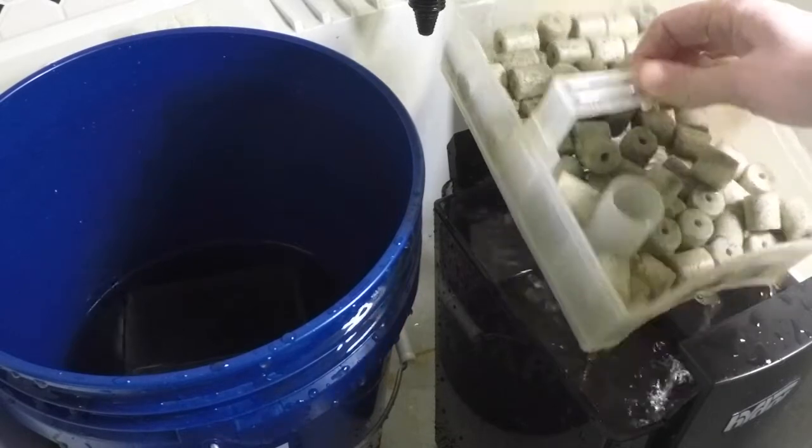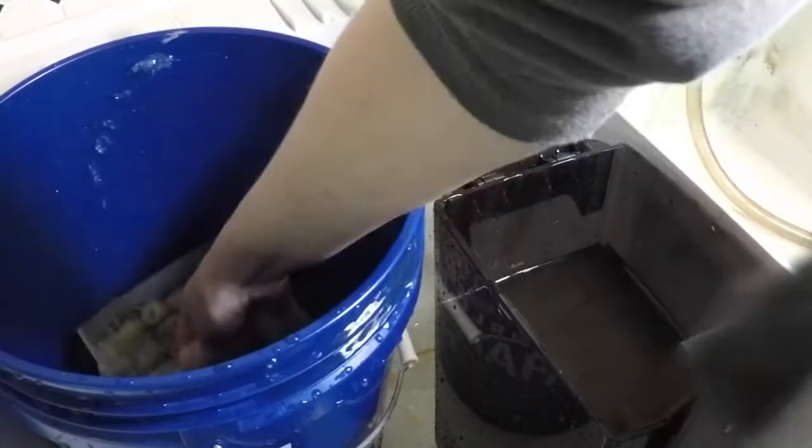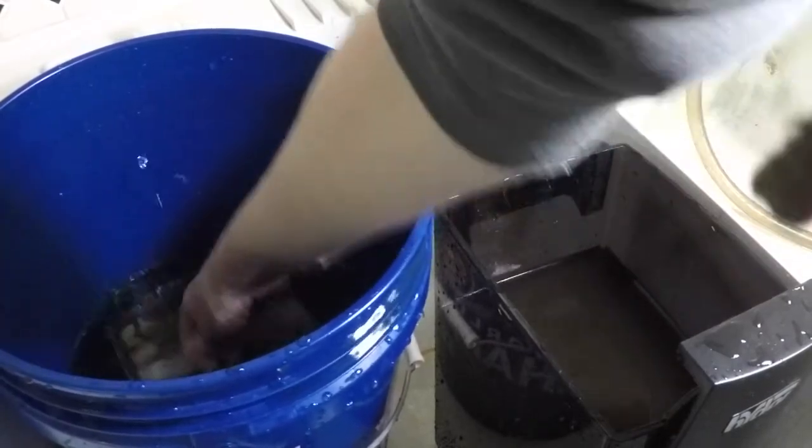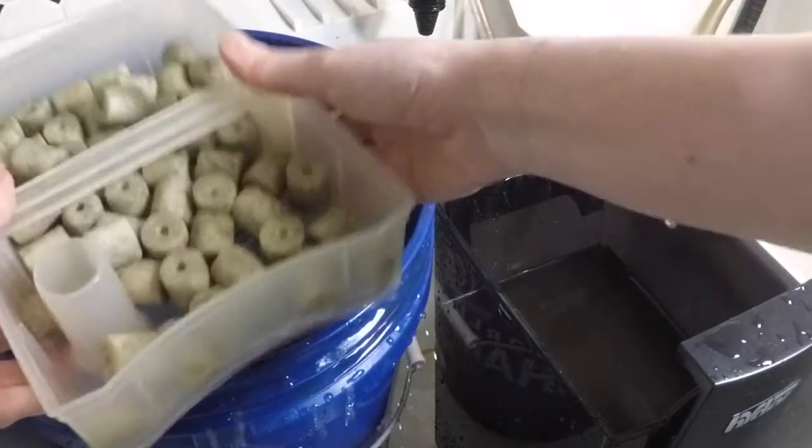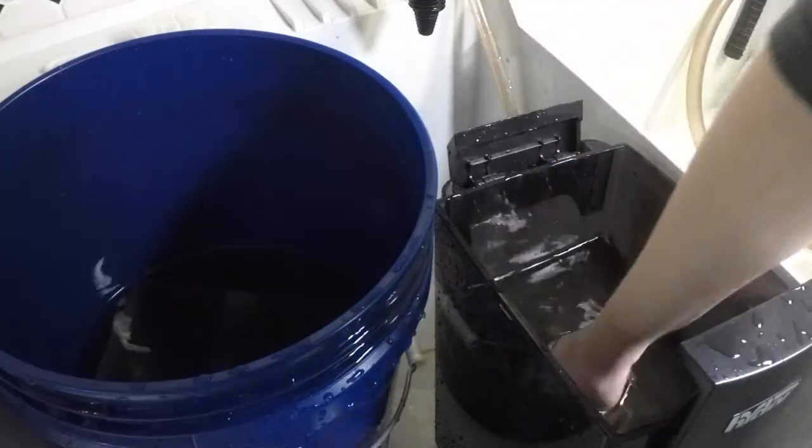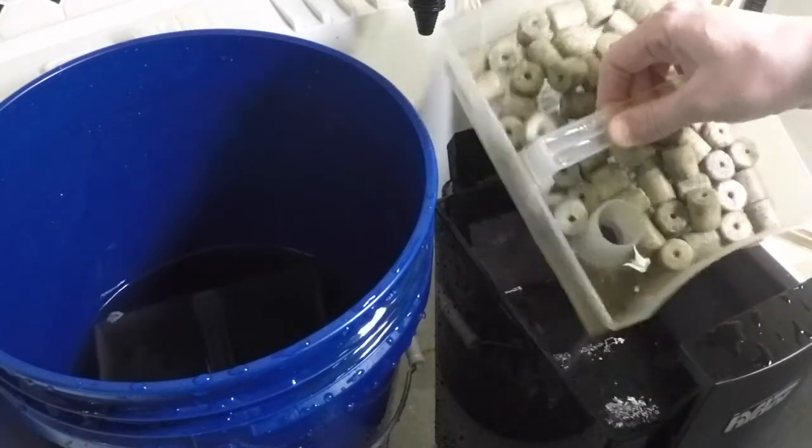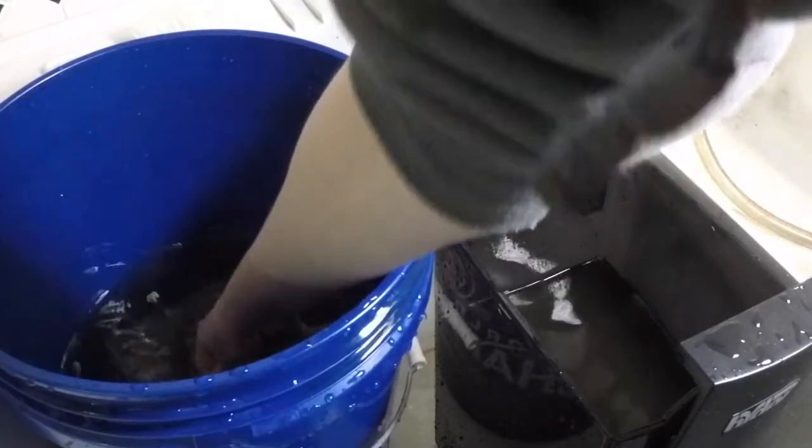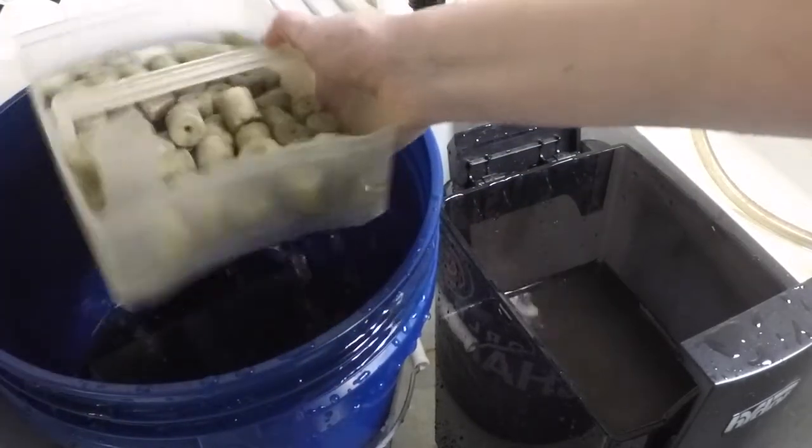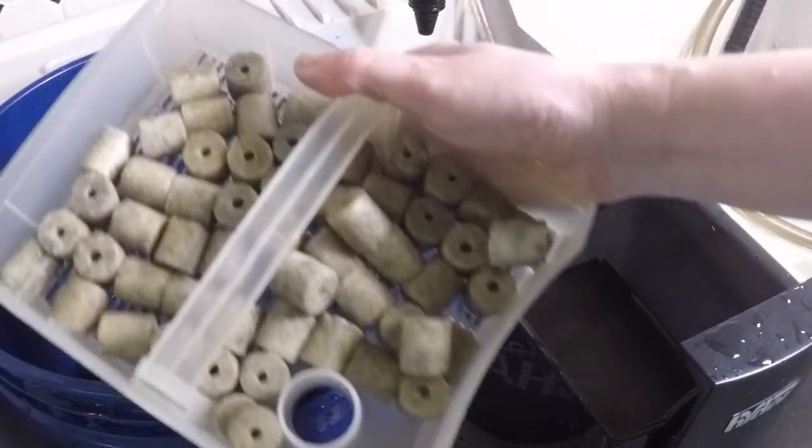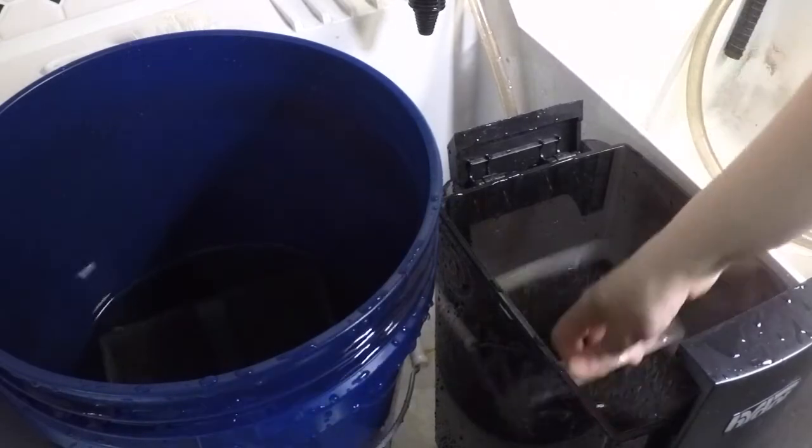Let me grab this one. This is just filled with Fluval rings here, looks nice and gross. So I'm just going to dunk it to rinse it and shake it. Set this aside. Here's the second tray, just the same thing. Now the water is looking really cloudy and getting more junk in there, but these filter rings can just look how they look.